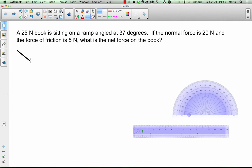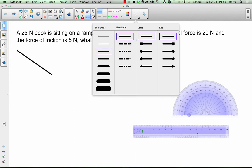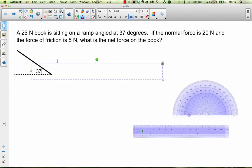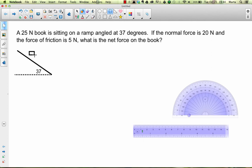The first step is still going to be to draw the free body diagram for your problem. For this free body diagram, I'm actually going to start with the ramp that the book is sitting on. As part of my diagram, I'm going to make sure to include a label for that angle. Next, I'll add a little rectangle to represent my book.